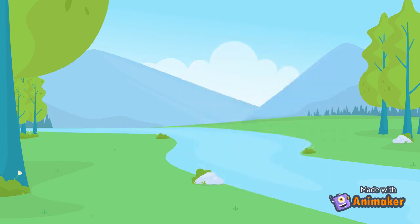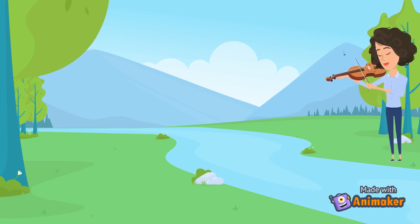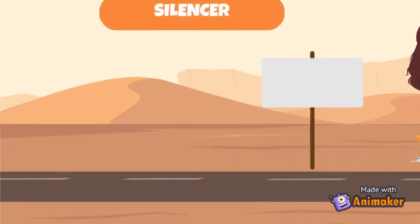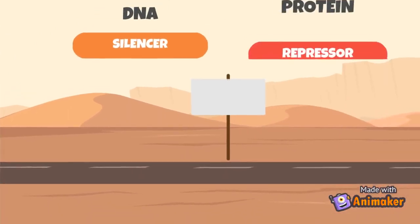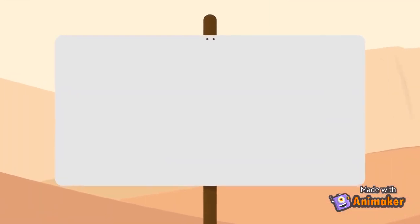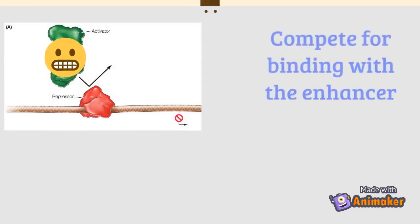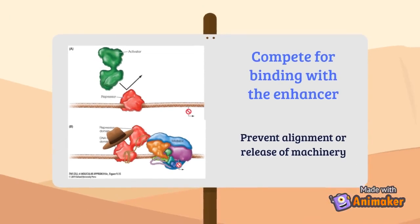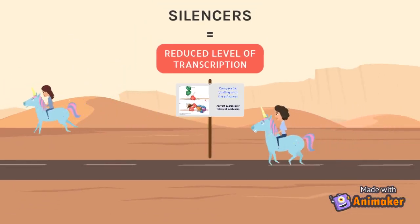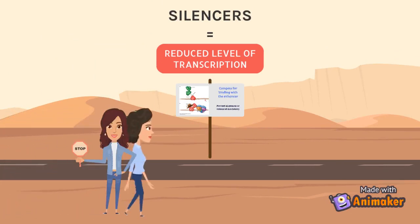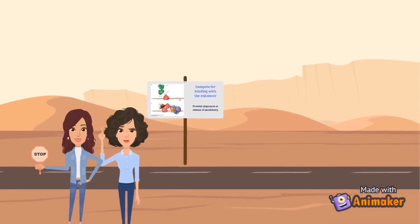Silencers seek to do the opposite. A silencer is the DNA region, and the repressor is a protein that will bind to it. Two things can happen: either it will play musical chairs and compete with the activator, or it will hold down the transcription machinery like a cowboy — which results in a decrease in the level of transcription. And this would be the conductor of the orchestra giving instructions to slow down, get softer, or bring the show to an end.